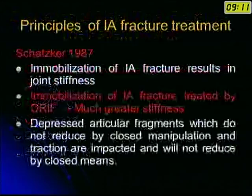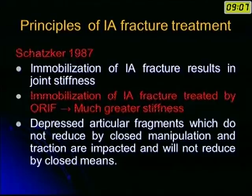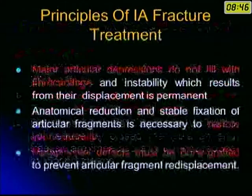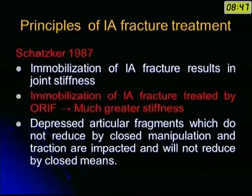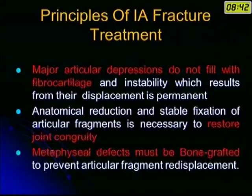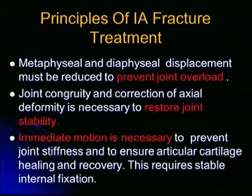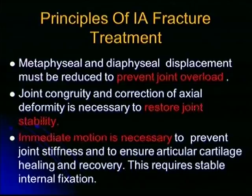Schatzker in 1887 said that immobilization of an intra-articular fracture results in joint stiffness, and immobilization of an intra-articular fracture treated by internal fixation leads to much greater stiffness. Depressed articular fragments that do not reduce by closed manipulation and traction are impacted and will not reduce by closed means. Major articular depressions do not fill with fibrocartilage. An anatomical reduction and stable fixation of articular fragments is necessary to restore joint congruity, and metaphyseal defects must be bone-grafted to prevent articular fragment displacement. Metaphyseal and diaphyseal displacement must be reduced to prevent joint overload, and correction of axial deformity is necessary to restore joint stability. Immediate motion is necessary to prevent joint stiffness. These were the principles he elucidated.